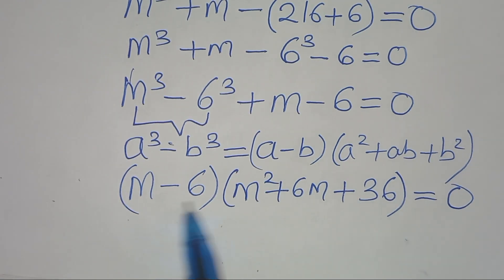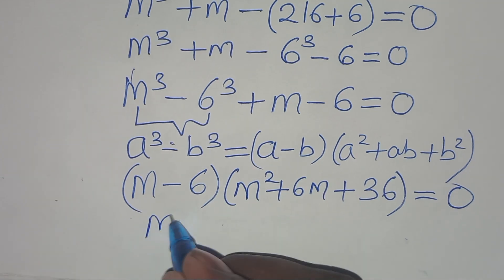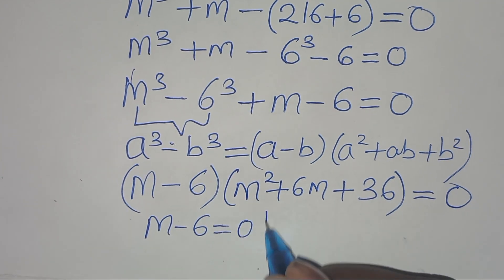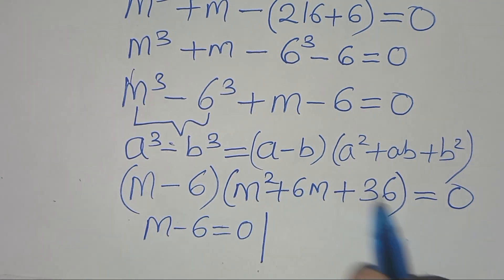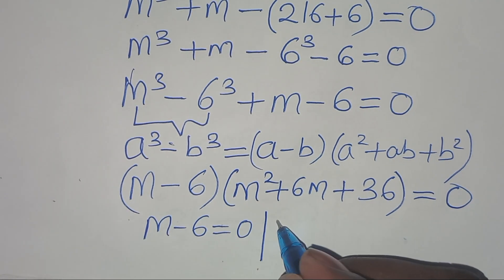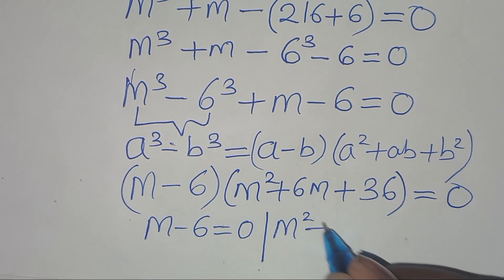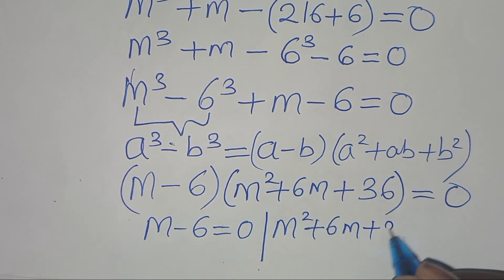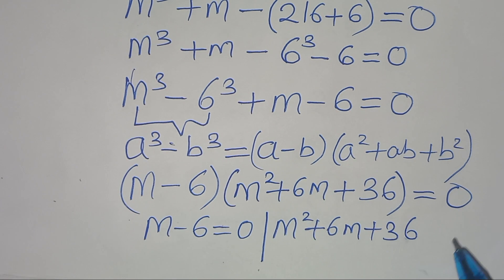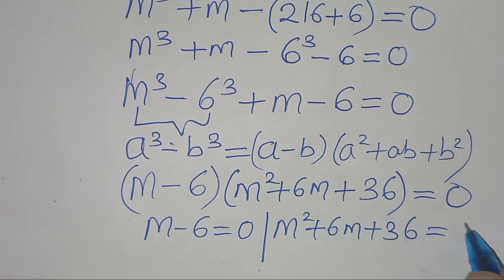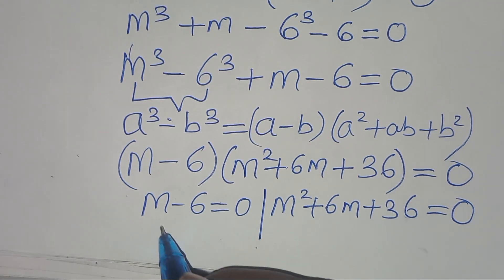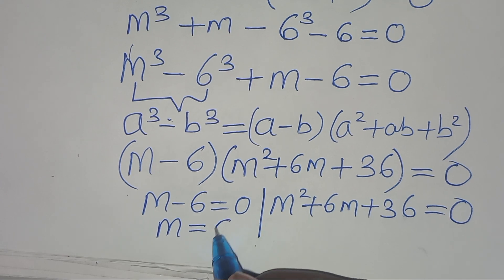We have two parts here. The first part is m minus 6, this is equal to 0. The second part is m to the power 2 plus 6m plus 36, this is equal to 0. From the first part, m is equal to 6.